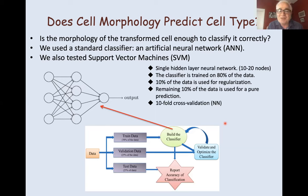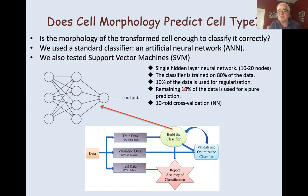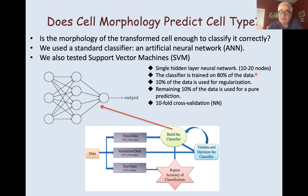So we asked: does single cell morphology predict cell type? Can we use something a little more sophisticated to predict that? We moved to machine learning — this seemed to be built for such an exercise. We started with a very simple machine learning artificial neural network with a single hidden layer of 10 to 20 nodes, nothing very sophisticated. We wanted to see: at the single cell level, is it possible to predict the cell type from these morphometrics measured for each cell?